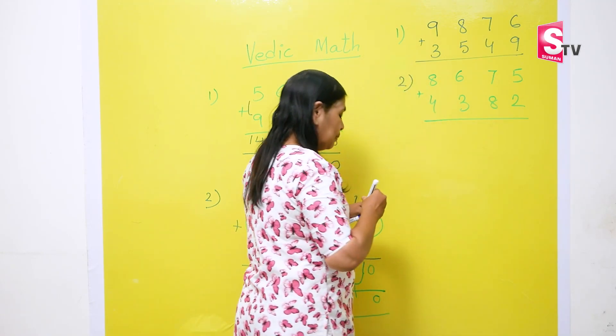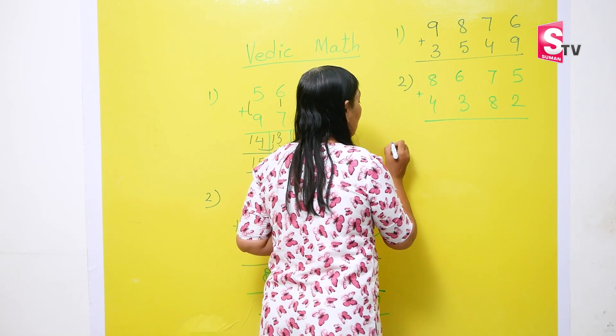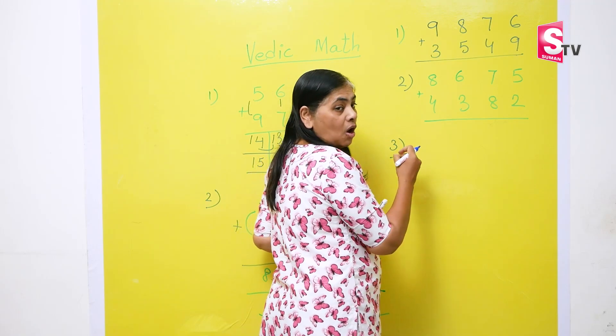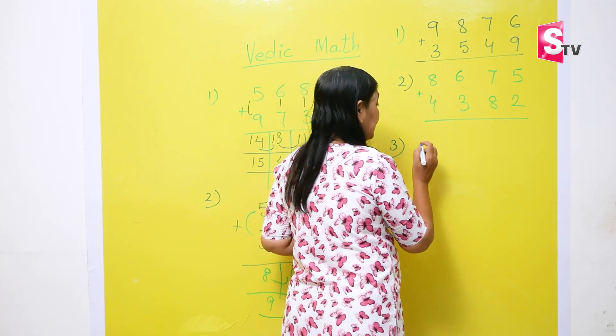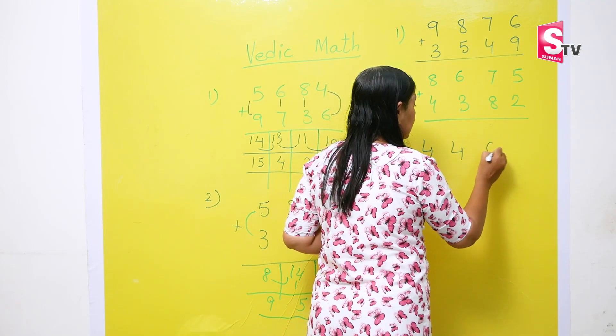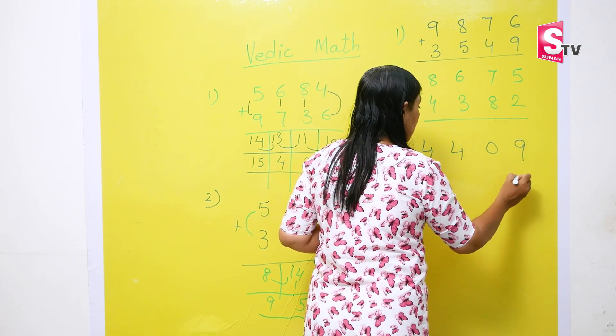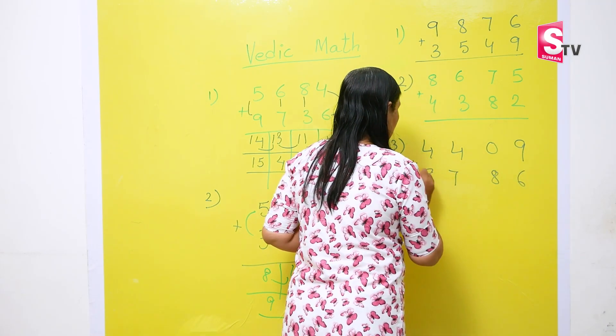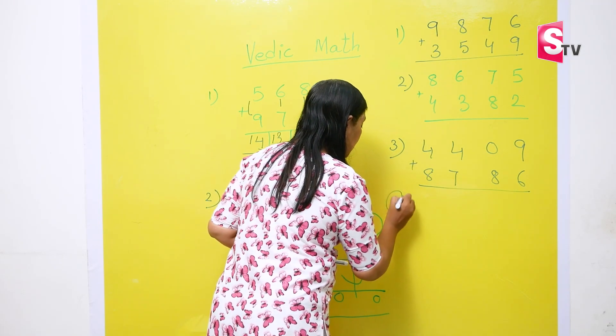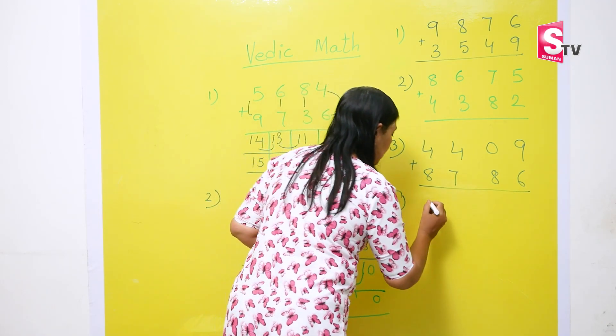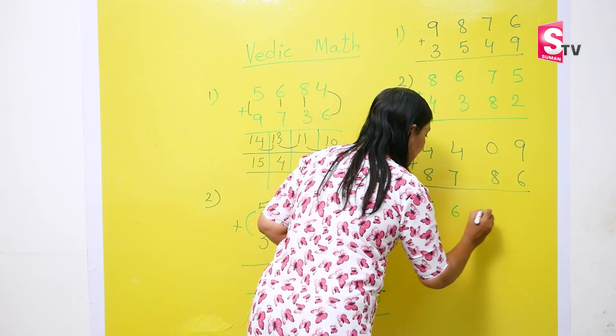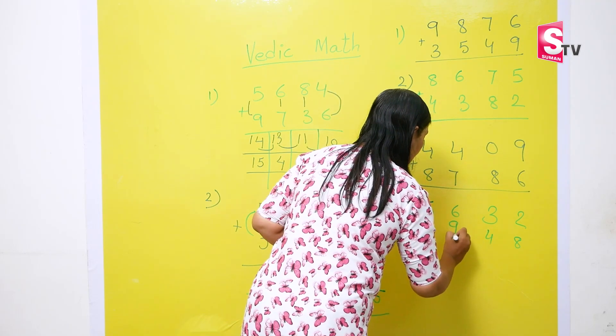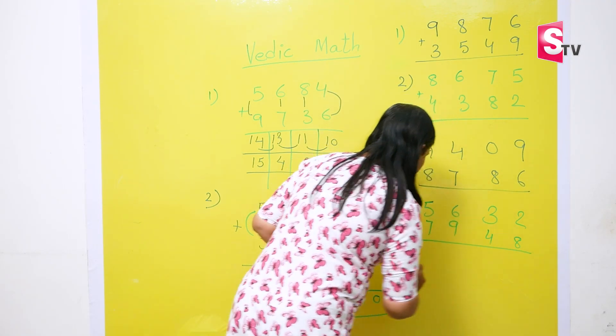You must not take more than 5 minutes to solve these sums. If you are taking more than 5 minutes, then you need to practice more sums or else you are just perfect with the ideas. So, the third sum is 4409 plus 8786. And the fourth sum goes here, 5632 plus 8497.